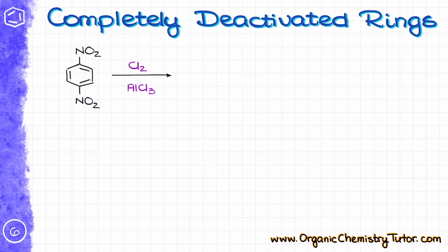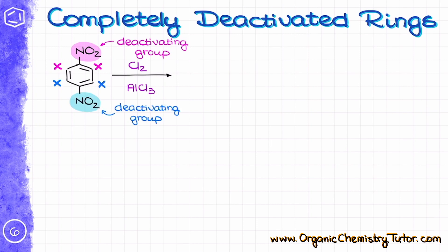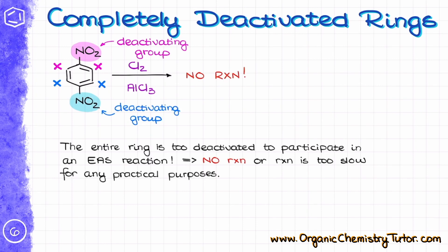Remember that I mentioned it's a good idea to think of meta directors as ortho/para deactivators instead — and that's because the molecule can be completely deactivated. For instance, here the pink nitro group is deactivating its own positions, and the blue nitro group is deactivating its own positions. As a result, the entire molecule is so deactivated that for all intents and purposes it is too unreactive for electrophilic aromatic substitution. It doesn't mean the reaction is entirely impossible, but deactivating groups make reactions go slow, and when the entire molecule is deactivated, the reaction will be so slow that for any practical purpose it won't be feasible.